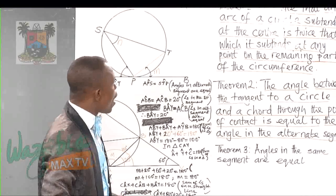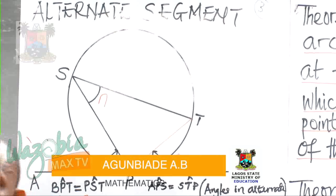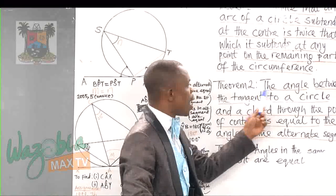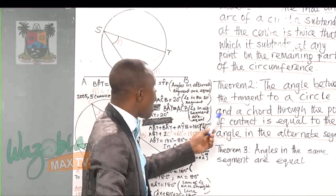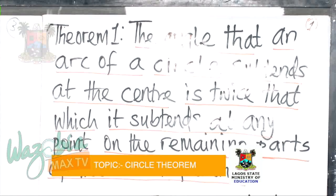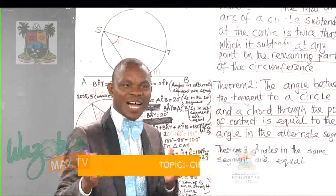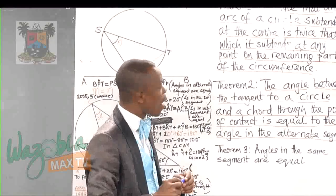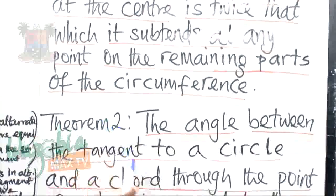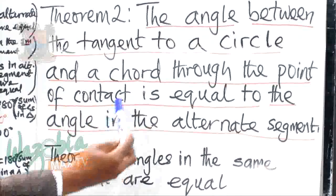Welcome back. We are going to continue from where we stopped. At this time, we'll be looking at alternate segments, which is another important aspect of tangent to a circle. The theorem connected with that is: the angle between the tangent to a circle and a chord through the point of contact is equal to the angle in the alternate segment. To help you remember — I equally have a song for this, using the tune of 'I Love You' from Barney and Friends. The angle between the tangent to a circle and a chord through the point of contact is equal to the angle in the alternate segment.